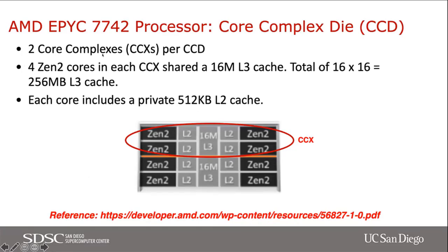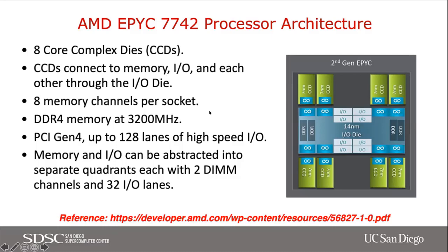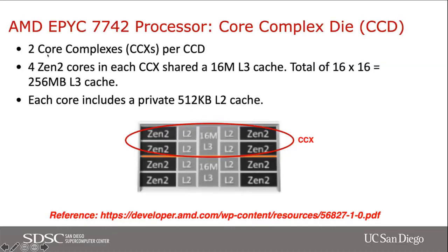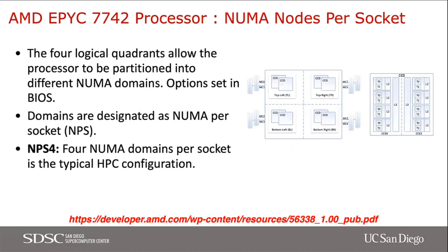Each core complex die has two core complexes. Each core complex has four Zen 2 cores, which share an L3 cache of 16 megabytes. There's a lot of L3 cache on this machine — 256 megabytes of L3 cache total. Each core also has private L2 cache of 512 kilobytes. You can see the hierarchical setup: the IODI, the CPUs split into the CCDs, and then each CCD has two core complexes with shared L3 caches.